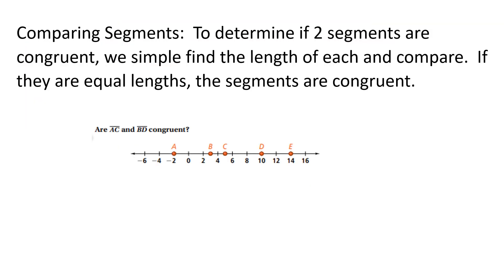Comparing segments: to determine if two segments are congruent, we simply find the length of each and compare. If they are equal lengths, the segments are congruent. Are segments AC and BD congruent? AC measures 2, 4, 6, and one more is 7 — note the increments are 2 — so AC has length 7. BD also measures 2, 4, 6, 7 — so BD is 7. Therefore, segment AC is congruent to segment BD.